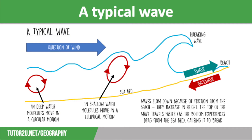You can see from the diagram that waves travel in the same direction as the wind, but molecules in the water affect how the waves travel. In deep water, the molecules move in a circular motion, which is why you can't see much change in wave height as you look out to the horizon. However, as the waves travel towards the beach and the water becomes more shallow, the molecules start to move in elliptical motion, forcing the wave height to increase. The waves slow down because of friction from the beach, making them increase in height. Finally, the top of the wave travels faster as the bottom experiences drag from the seabed, which causes it to break.